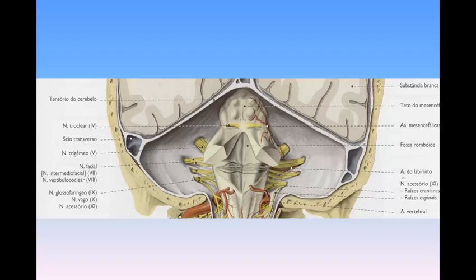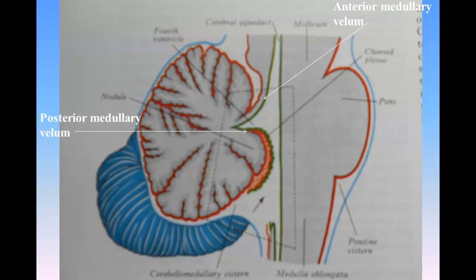Lateral boundaries: The lower part of each lateral boundary is constituted by the clava, the fasciculus cuneatus, and the inferior peduncle; the upper part by the middle and the superior peduncle.